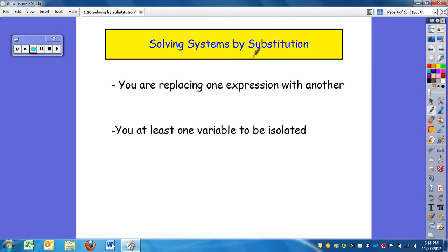So solving systems by substitution. Remember if you're substituting something in you are replacing one expression with another. And to do systems by substitution you want at least one variable to be isolated. So what does that mean? I want in one equation either a y equals, an x equals, an a equals, and so forth. If I have that in one or both equations I'm going to be able to solve this by substitution. You can solve it if it's not that way but other methods might be more preferred than using substitution.